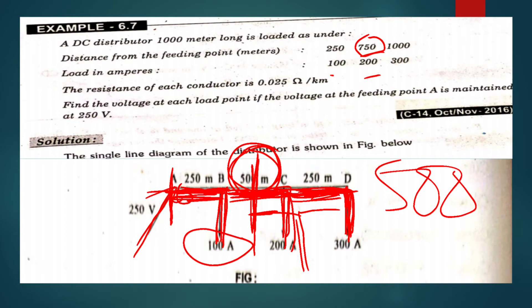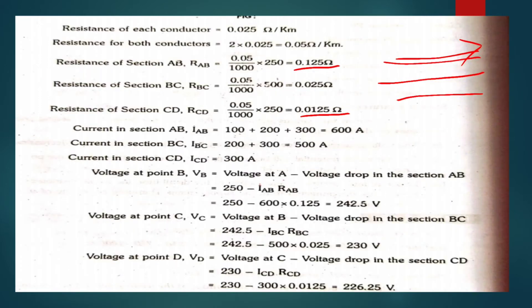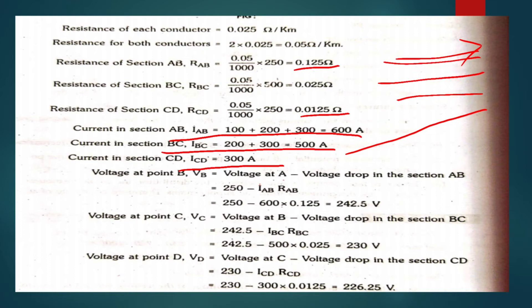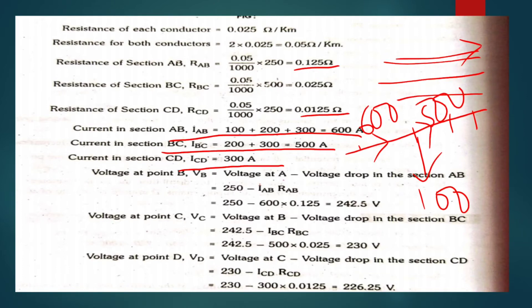From the redrawn diagram with points A, B, C, D: IAB = 600 amps total flowing from A. At point B, 100 amps tapping is taken, leaving 500 amps flowing to BC. At point C, 200 amps tapping is taken, leaving 300 amps for section CD. ICD = 300 amps at the end.